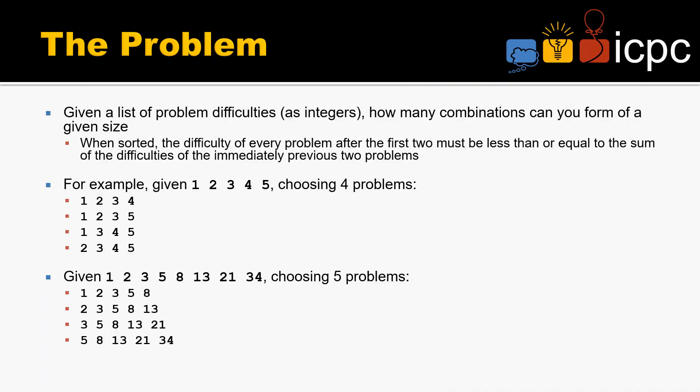Given a list of problem difficulties, how many combinations can you form of a given size, so that when sorted, the difficulty of every problem after the first two is less than or equal to the sum of the difficulties of the immediately previous two problems.